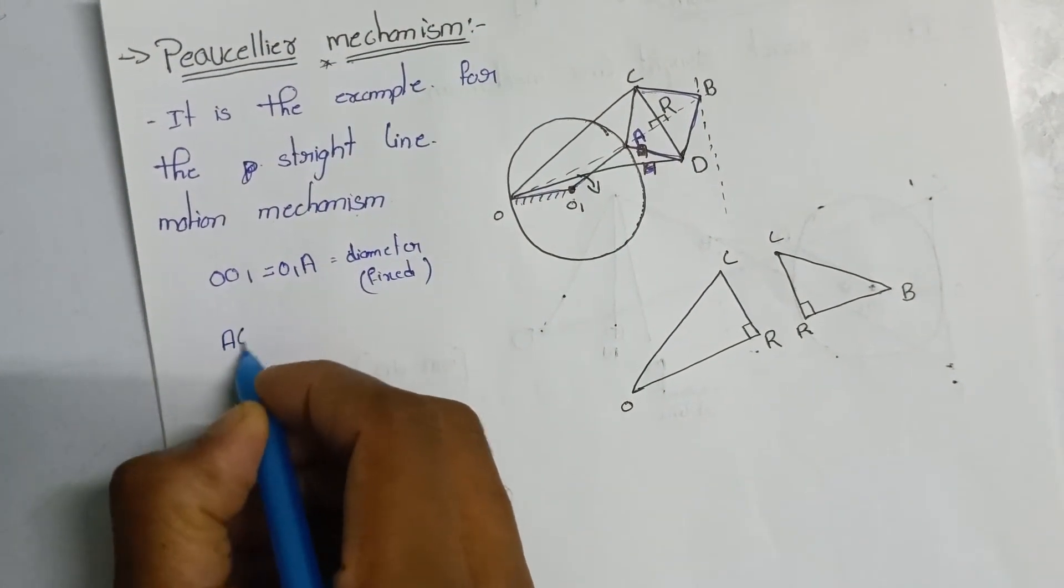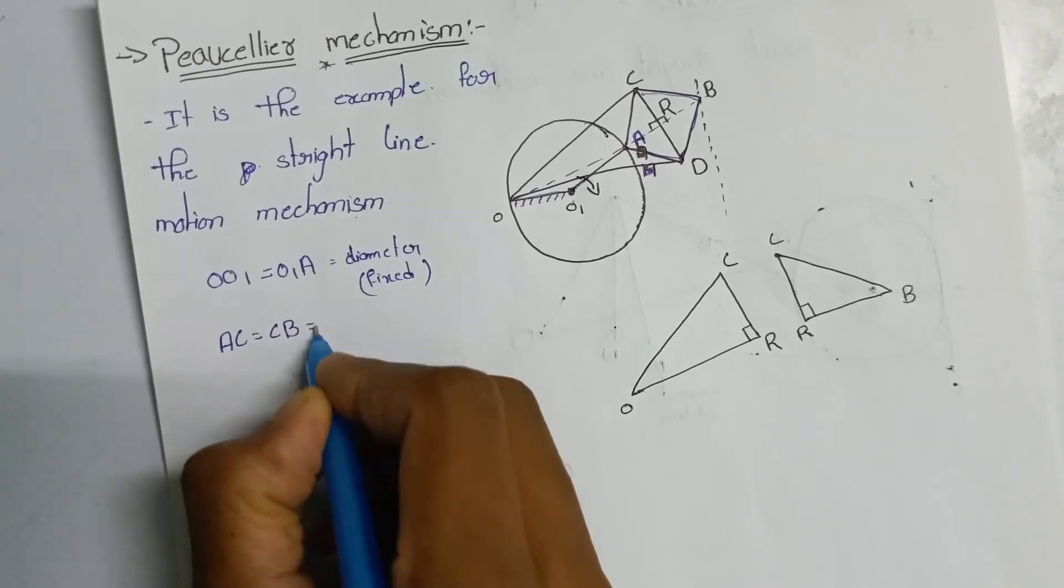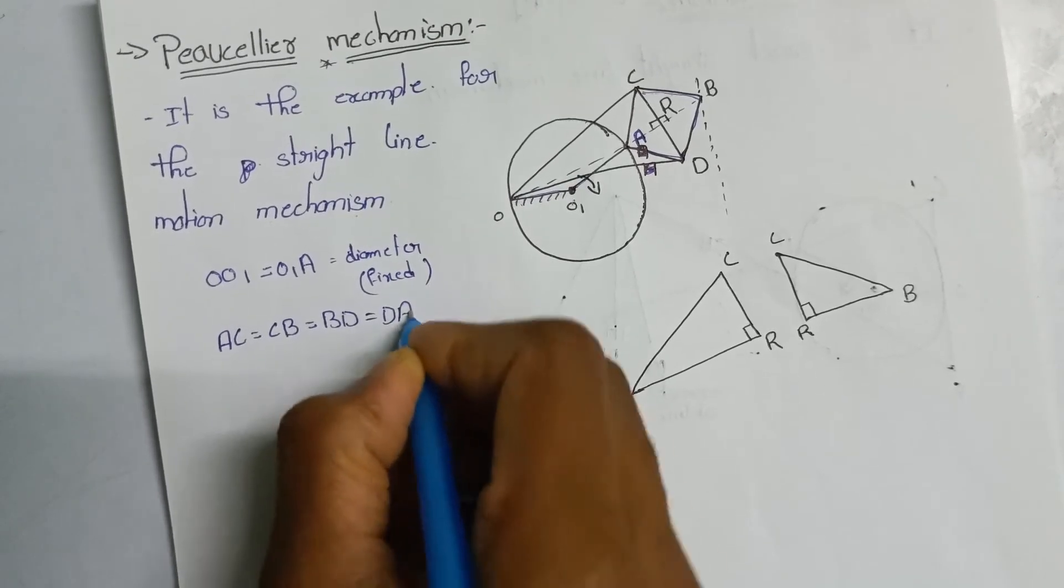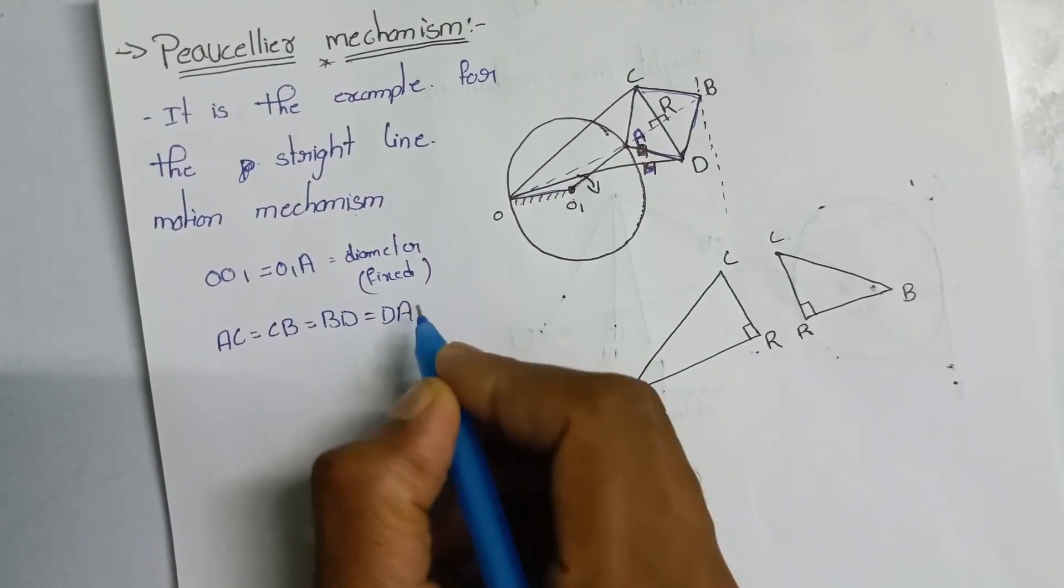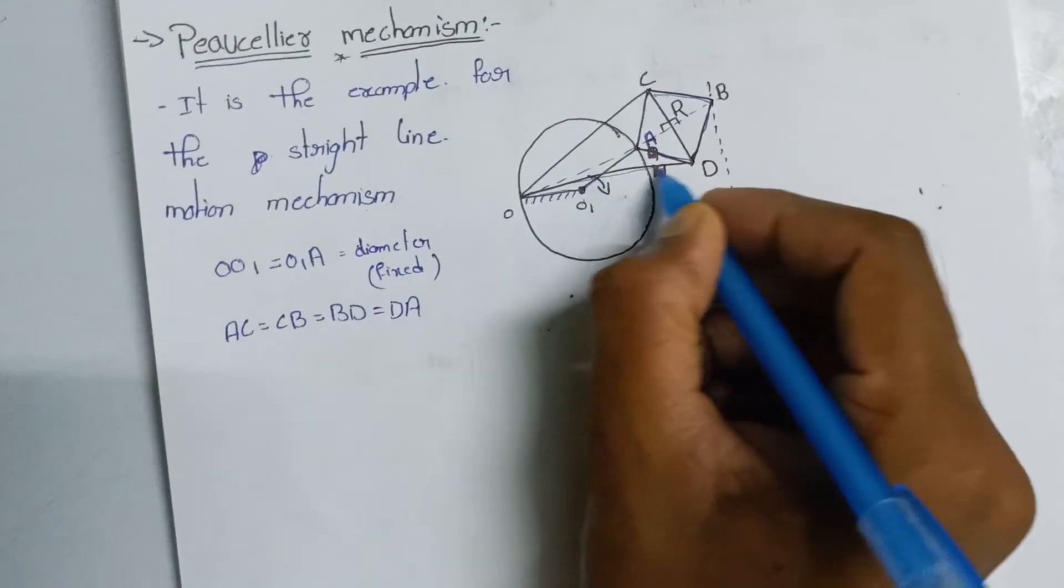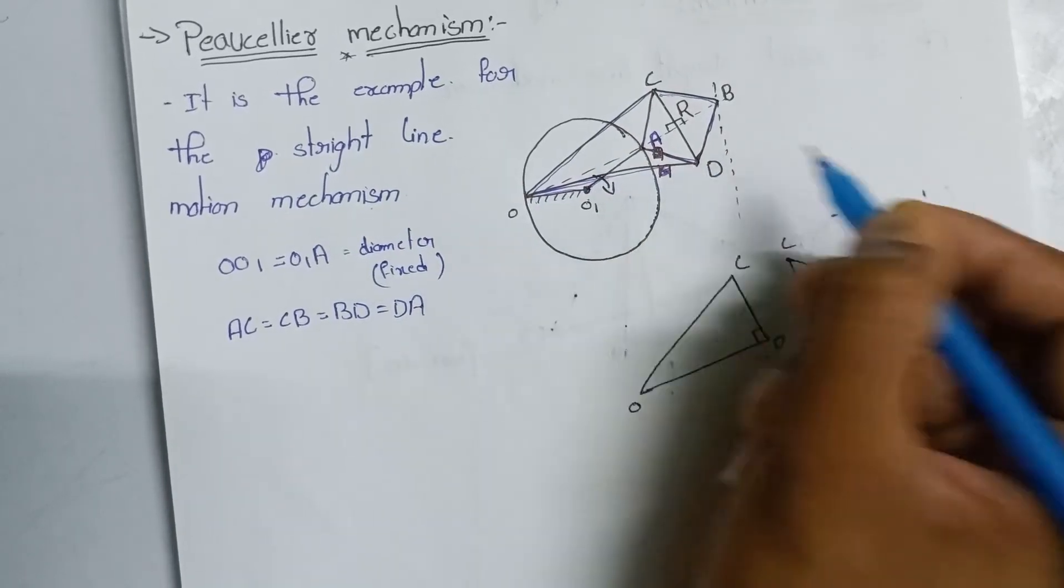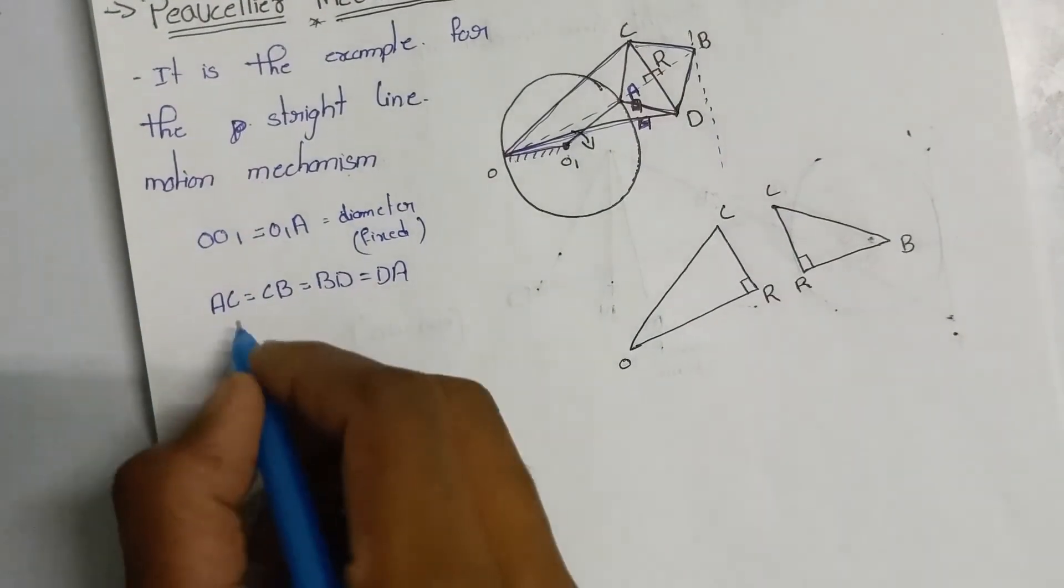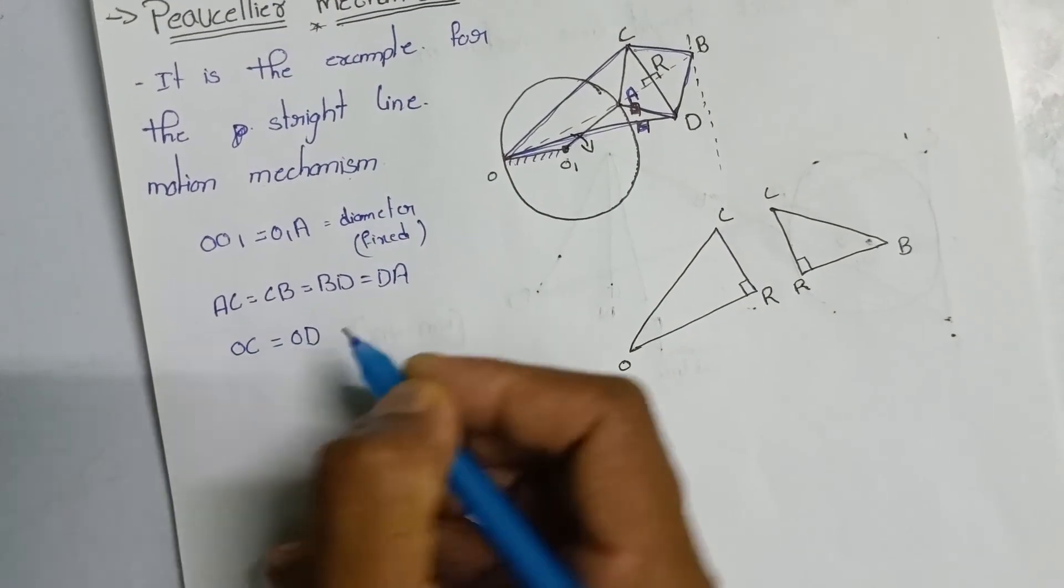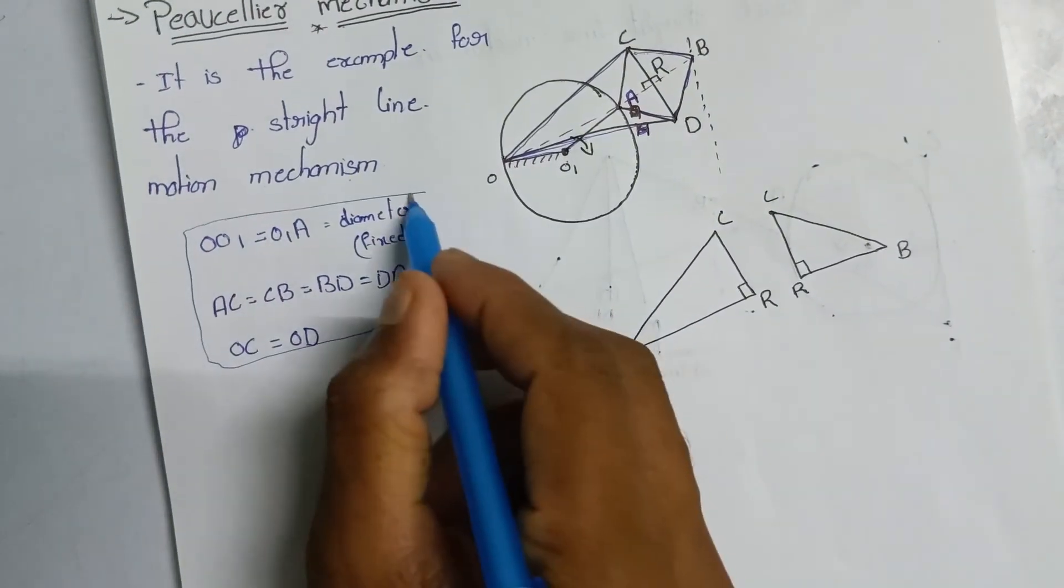AC is equal to CB is equal to BD is equal to DA. Next, we will see OC is equal to OD. These links have the same length. OC is equal to OD relation clarifies this.